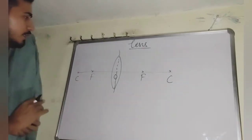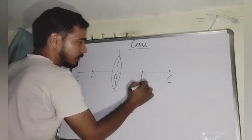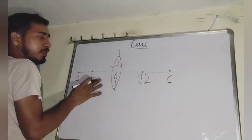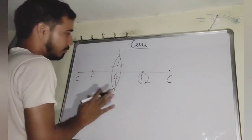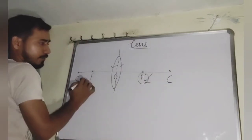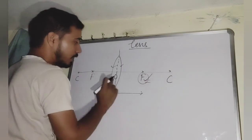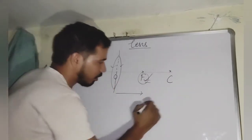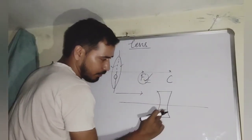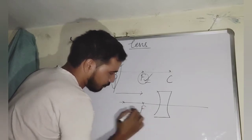In the case of a convex lens, the first focus and the second focus are defined when the two curved surfaces have different radii of curvature and thus different focal lengths. When the radii of curvature are the same, the focal length is the same, but we still refer to the first principal focus and the second focus.